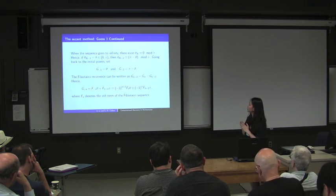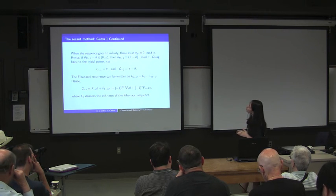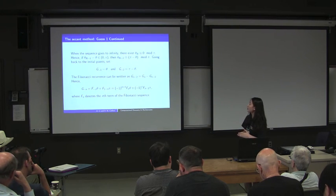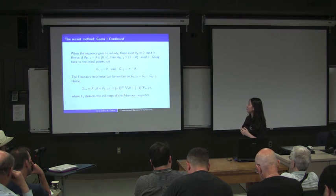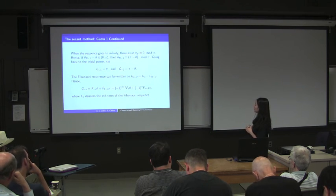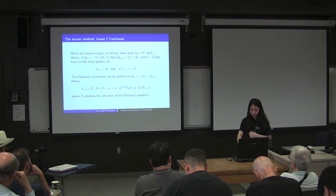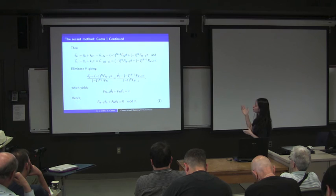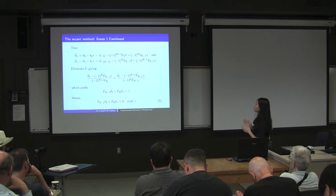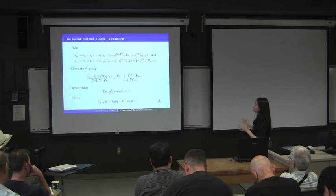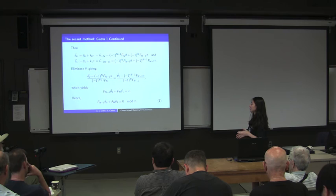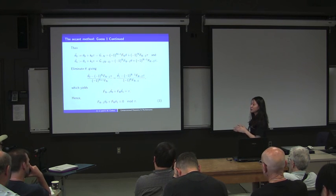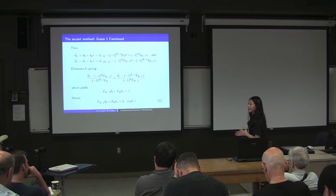We can construct a general Fibonacci sequence g, setting g₋₁ equals θ and g₋₂ equals π minus θ, and derive a general formula for g in terms of the Fibonacci sequence. This gives an expression for the two initial angles as congruent to g₋ₙ and g₋ₙ₋₁ modulo π. Eliminating θ gives the relationship between the two initial angles: if there exist two successive Fibonacci terms whose linear combination with the two initial angles is a multiple of π, then the iteration will eventually blow up; otherwise it eventually cycles.